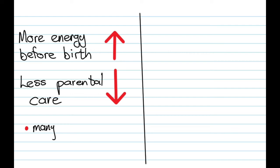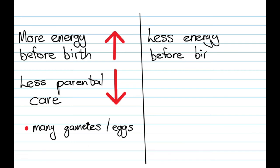So some organisms will spend a lot of energy on producing gametes or producing eggs, but if you spend less energy before birth, then there will be more parental care because then they have more energy available for parental care.